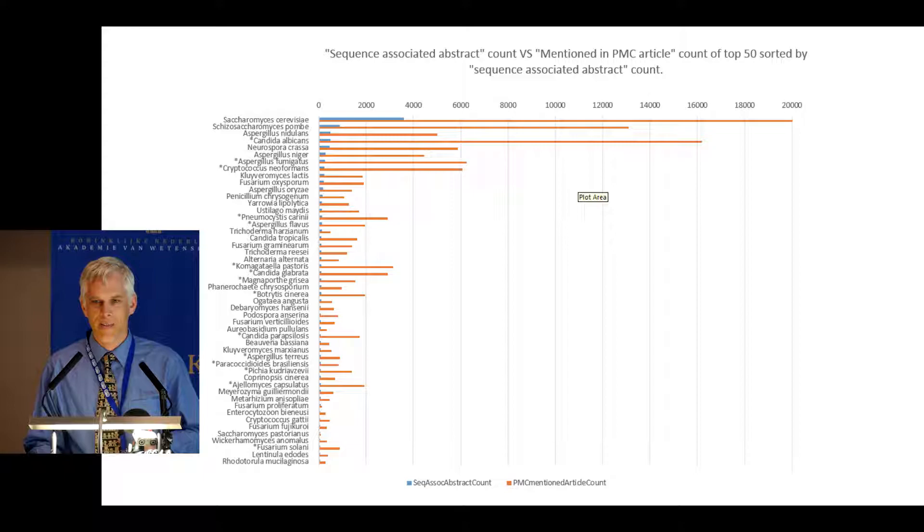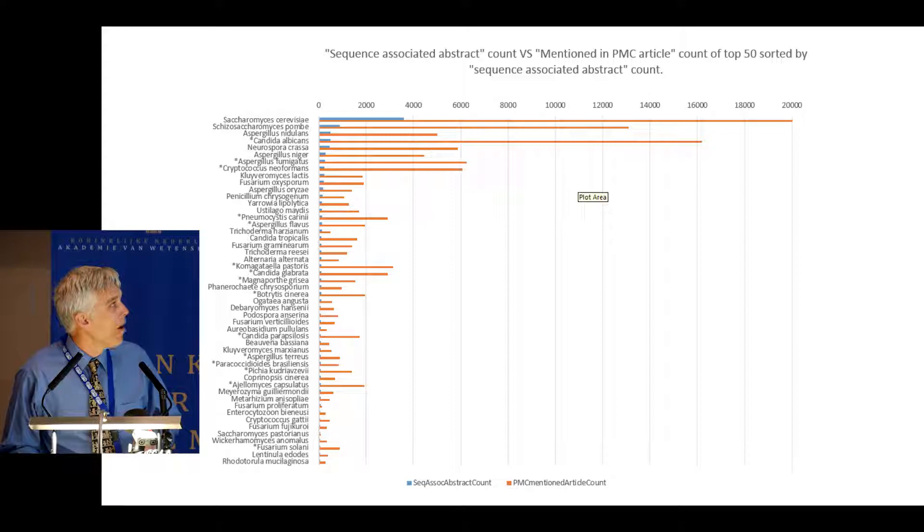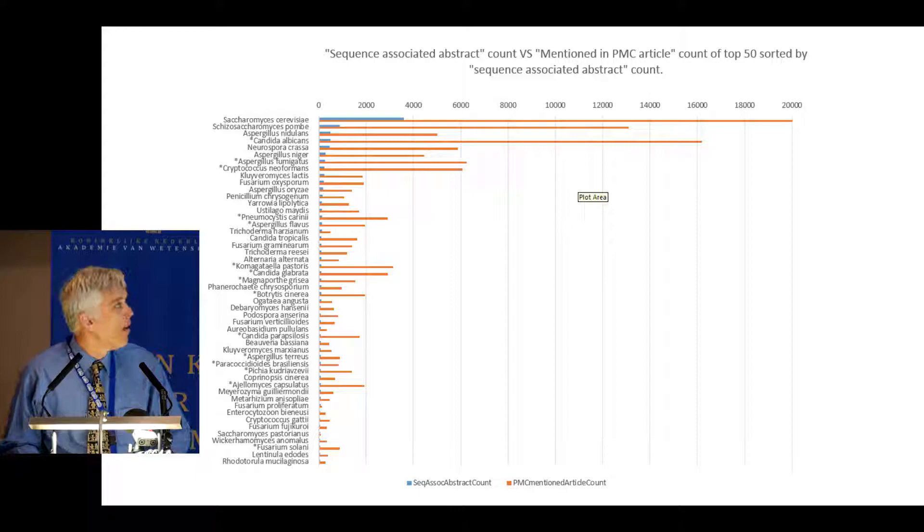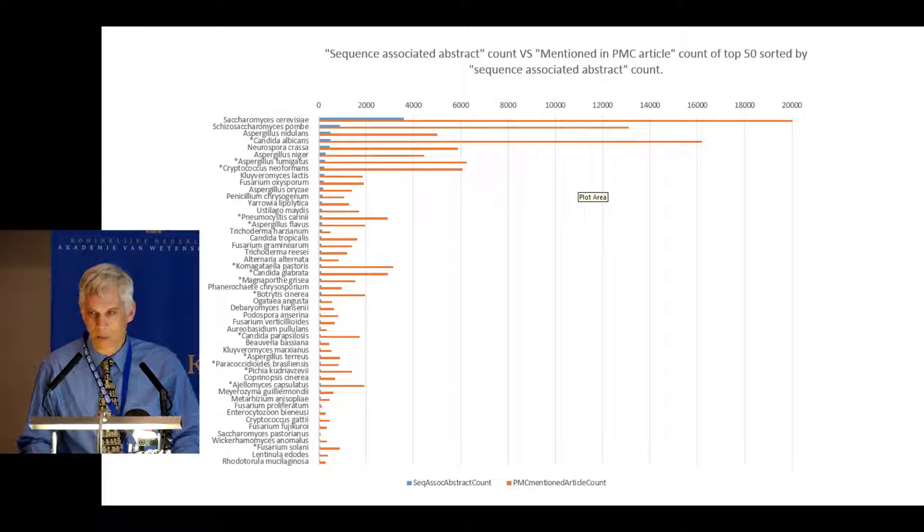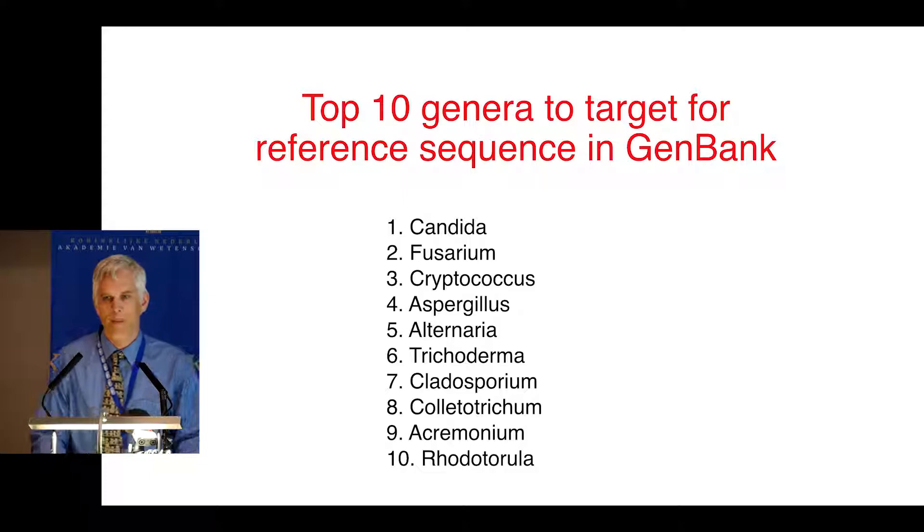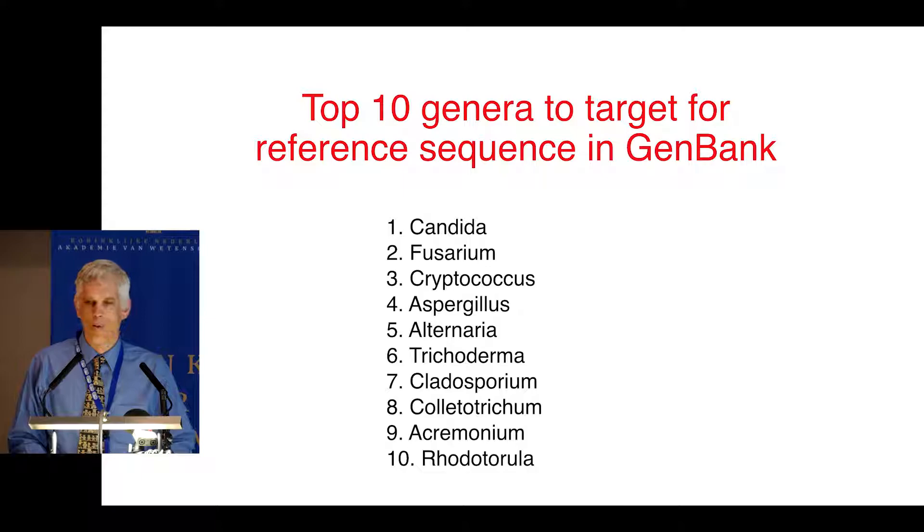Here's one way to attack the problem. I have to thank Barbara Roberts who did the query. Basically she compiled all the mentions of specific species in PubMed Central, which is the PubMed repository for complete texts. It's biased towards medical literature. She also looked at specific species accessions associated with these articles. The top species is Saccharomyces cerevisiae, no surprise there, followed by Pombe, Aspergillus and down the list. If we parse it into genera, this is the list that I came up with.